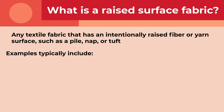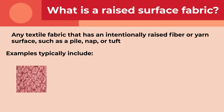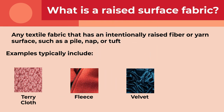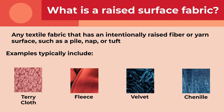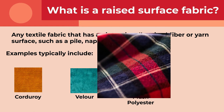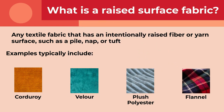Examples of raised surface fabrics typically include terry cloth, fleece, velvet, chenille, corduroy, velour, plush polyester, and flannel. Flannel and micropolyester are the most common raised surface fabrics. An example of a manufacturing process that intentionally raises the fibers would be the fabric going through an agitator that cuts and brushes the fibers on the top surface.